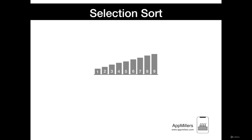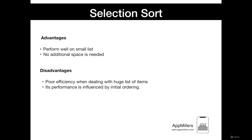Selection sort works by repeatedly going through the list of items, each time selecting an item according to its ordering and placing it in the correct position in the sequence. The main advantage of selection sort is that it performs well on small lists. Furthermore, because it is an in-place sorting algorithm, no additional temporary storage is required beyond what is needed to hold the original list. The primary disadvantage is its poor efficiency when dealing with a huge list of items. Similar to bubble sort, selection sort requires n-squared steps for sorting n elements. Additionally, its performance is easily influenced by the initial ordering of items. Because of this, selection sort is only suitable for a list of few elements that are in random order.